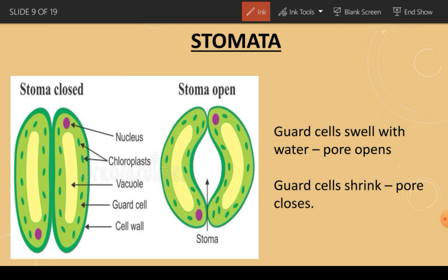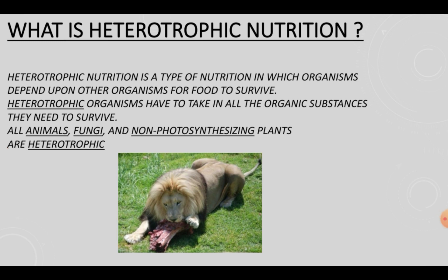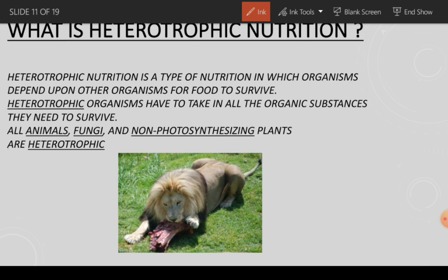Now let's look into heterotrophic nutrition. Heterotrophic nutrition is a type of nutrition in which organisms depend upon other organisms for their food to survive. Heterotrophic organisms have to take in all organic substances from other organisms — they cannot make anything on their own. All kinds of animals, fungi, and non-photosynthesizing plants are heterotrophic.